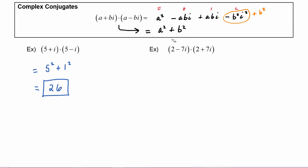In this example we have (2 - 7i) times (2 + 7i), so we are multiplying complex conjugates. Using the rule, we take the first term and square it — two squared — and add that to the coefficient of the i term squared — seven squared. We have four plus forty-nine, which is equal to fifty-three.